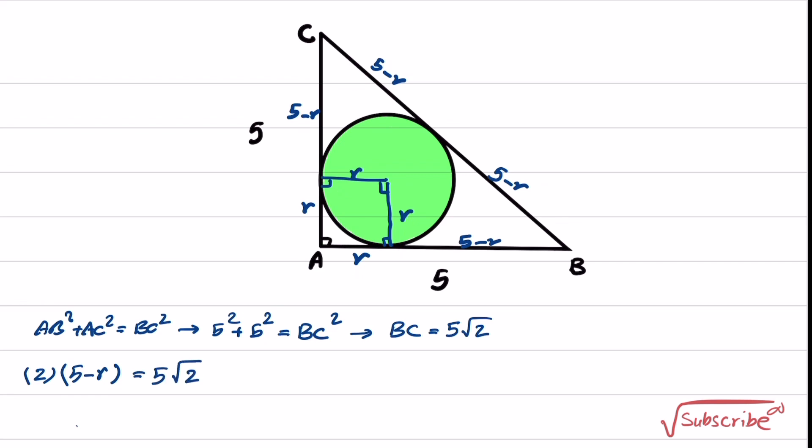So if we try to solve this, we will get 5 minus r equals to 5 times square root of 2 over 2. And from this, 5 minus 5 times square root of 2 over 2 equals r. And this is the radius that we were looking for.